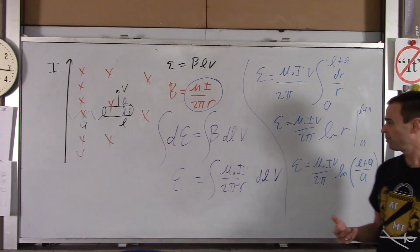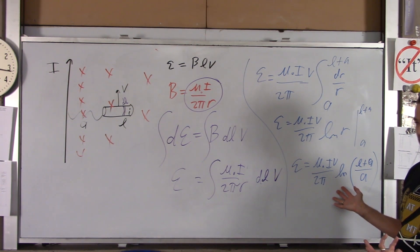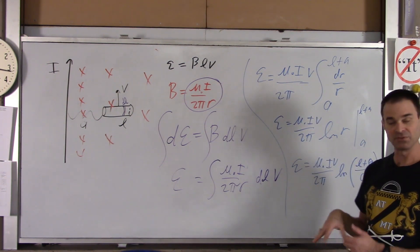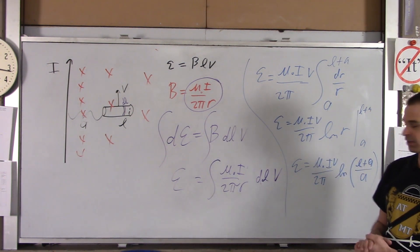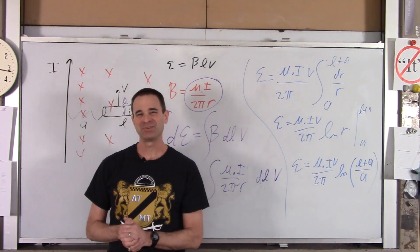Figuring out the EMF created by a moving conductor through a magnetic field. And in this case, the magnetic field varied over the length of the conductor. So I hope that was helpful. And thank you very much.